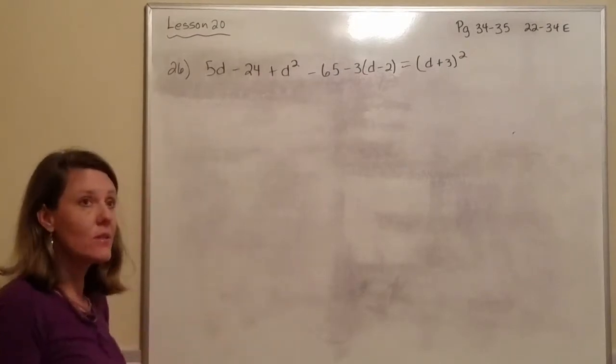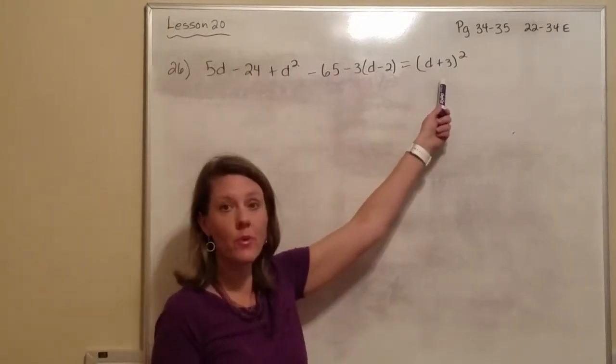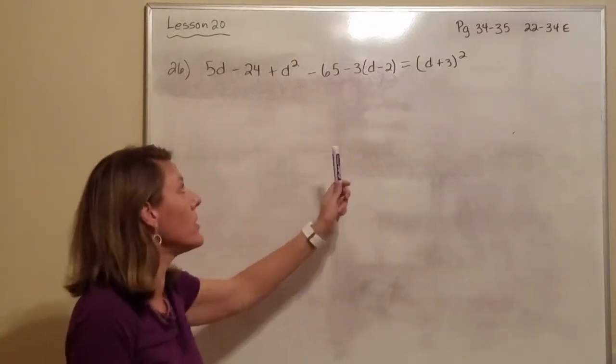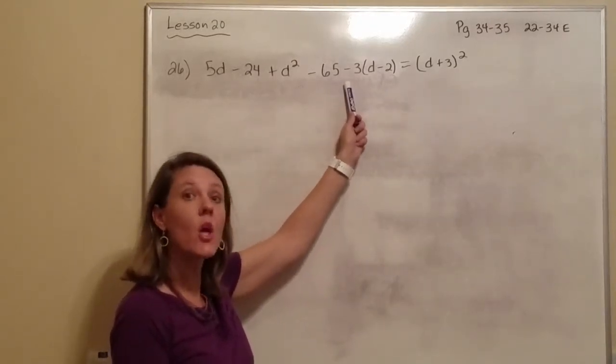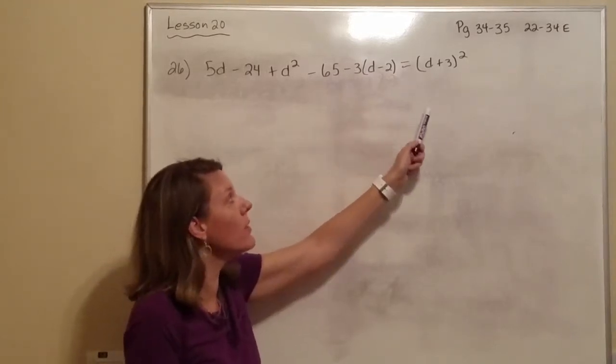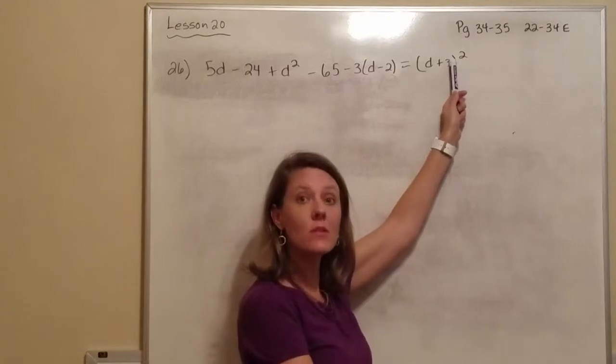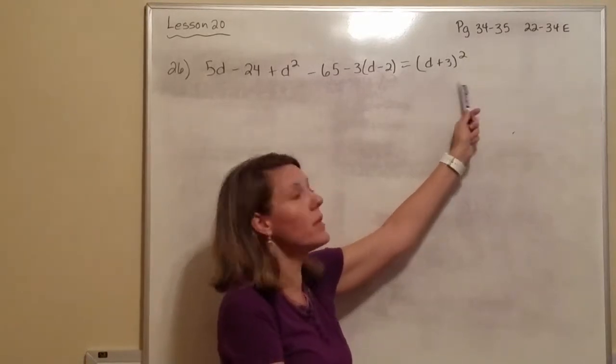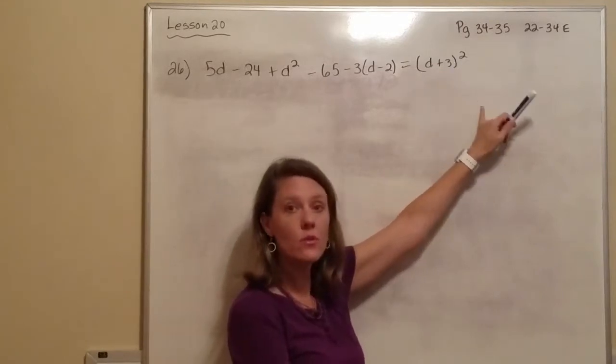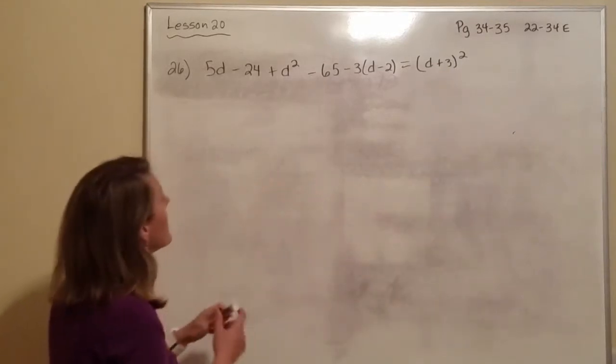For number 26, we have two sets of parentheses, so let's go ahead and work with those first. This has a coefficient out in front, so we will distribute it into both. This, it's being squared. So we're going to use our formula, we know the pattern, in order to square that. So let's do it.